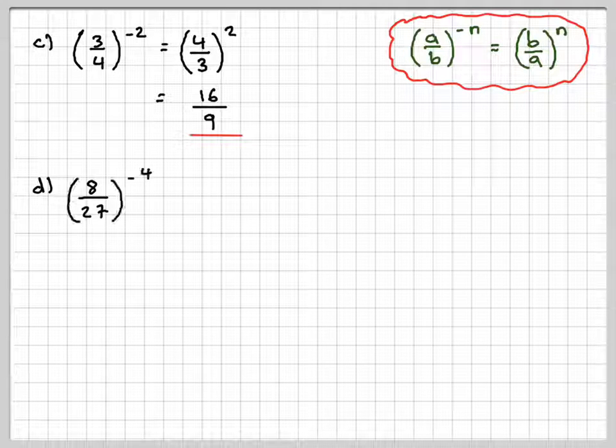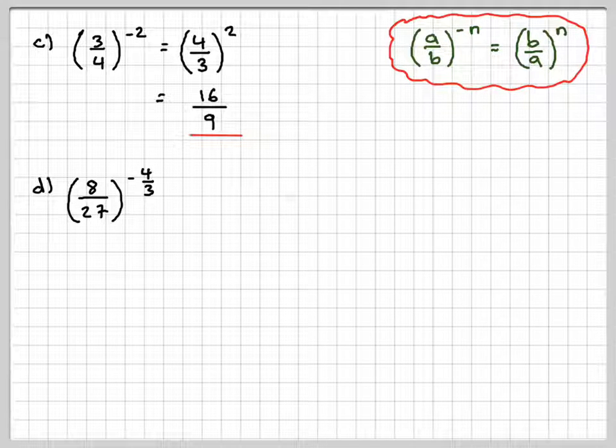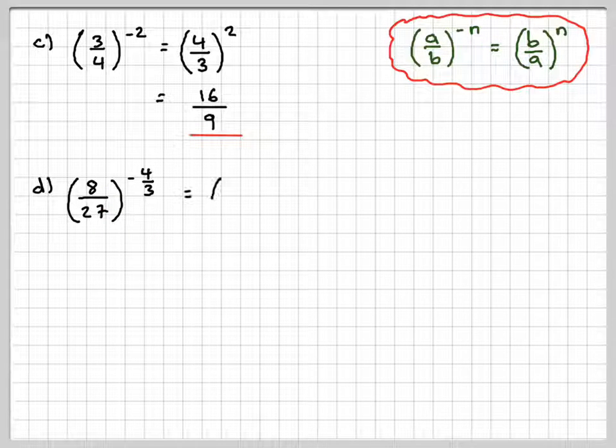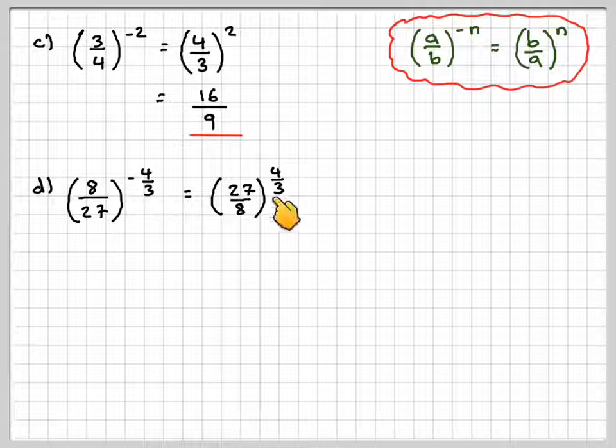Part d, 8 over 27 to the minus 4 over 3. So first of all, we're going to apply this rule here. So we're going to write this as 27 over 8, and then make the power positive, which is 4 over 3.